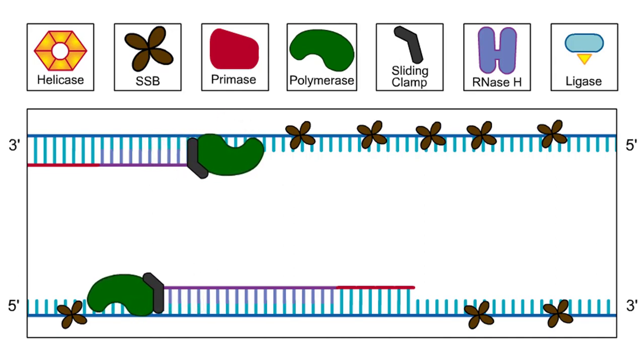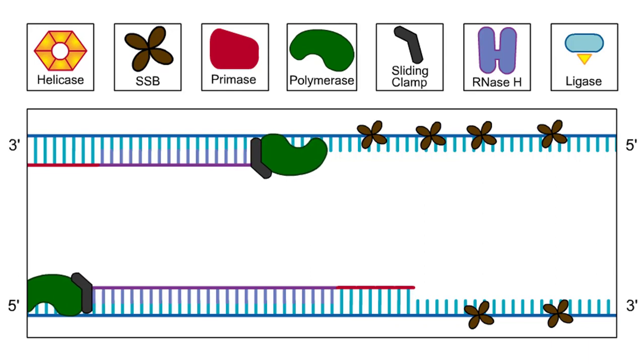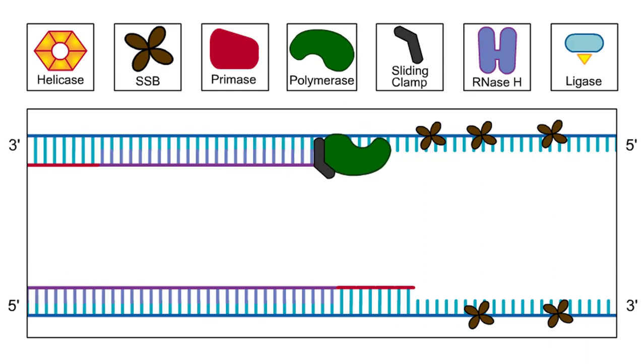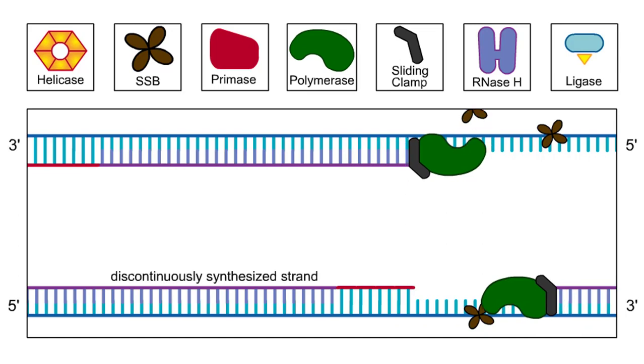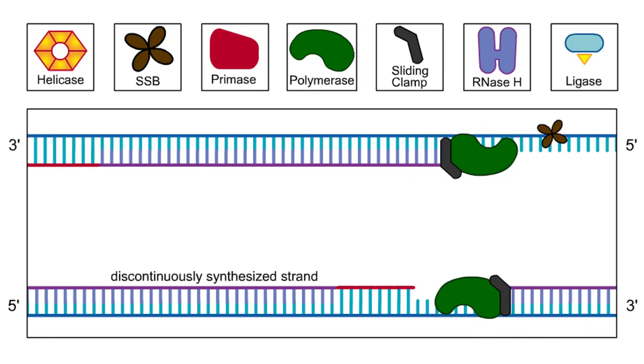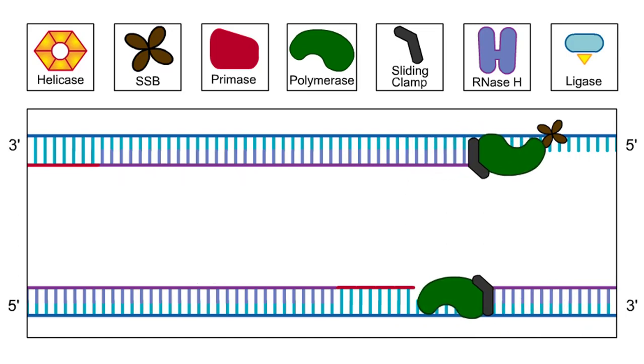Remember, both template strands move through the replication factory in the same direction, and DNA polymerase can only synthesize DNA from the 5' end to the 3' end. Due to these two factors, one of the DNA strands must be made discontinuously in short pieces which are later joined together.